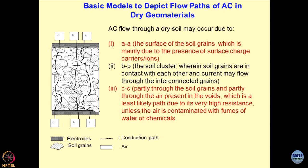This type of current passage is more likely in fine grained materials compared to coarse grained materials. The third possibility is partly through the soil grains and partly through the air in the voids — the least likely path due to the high resistance offered by air. Presently, we are trying to model the gaseous phases and bacterial activity into the soil mass. The bacteria itself becomes a particle, and gas molecules present in the pores under pressure and temperature may dissolve in the pore solution or crystallize as ice. This becomes a very complicated matrix.